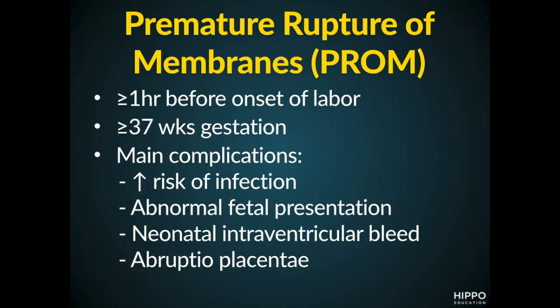Premature rupture of membranes occurs one or more hours before the onset of labor at term — that is, 37 weeks of gestation or greater. We also have a condition called preterm premature rupture of membranes, which occurs less than 37 weeks of gestation.